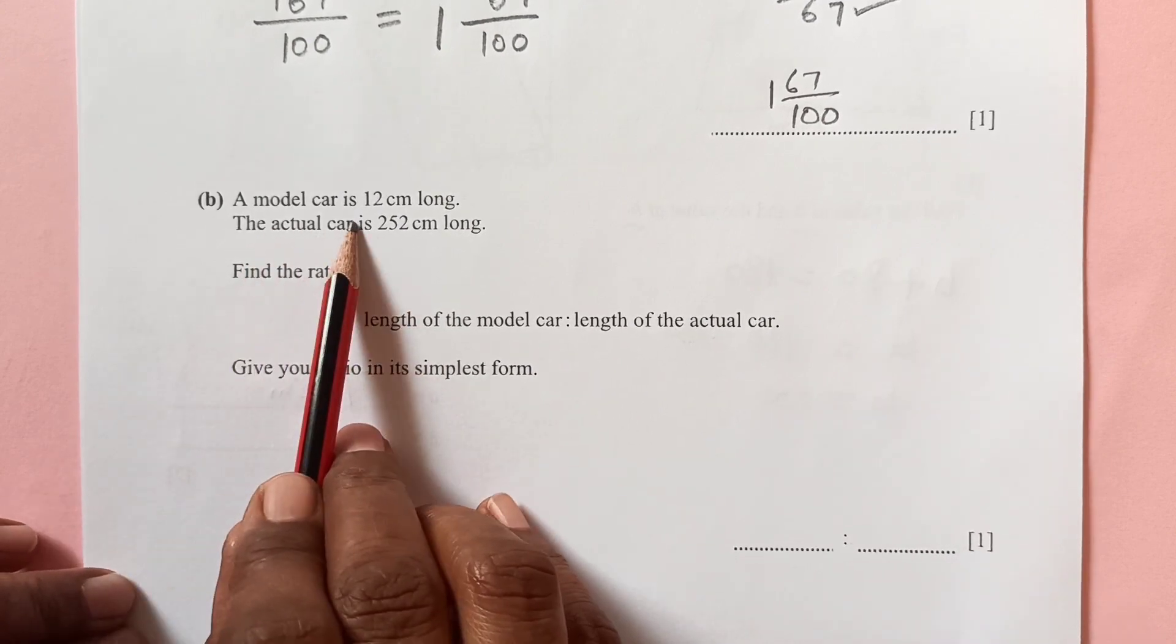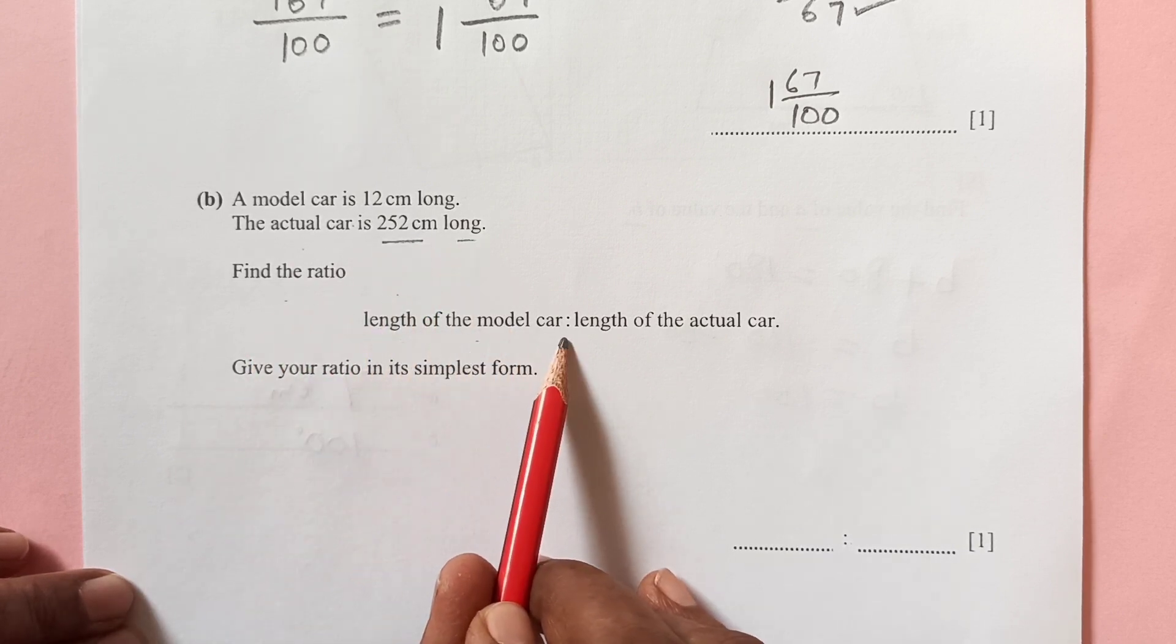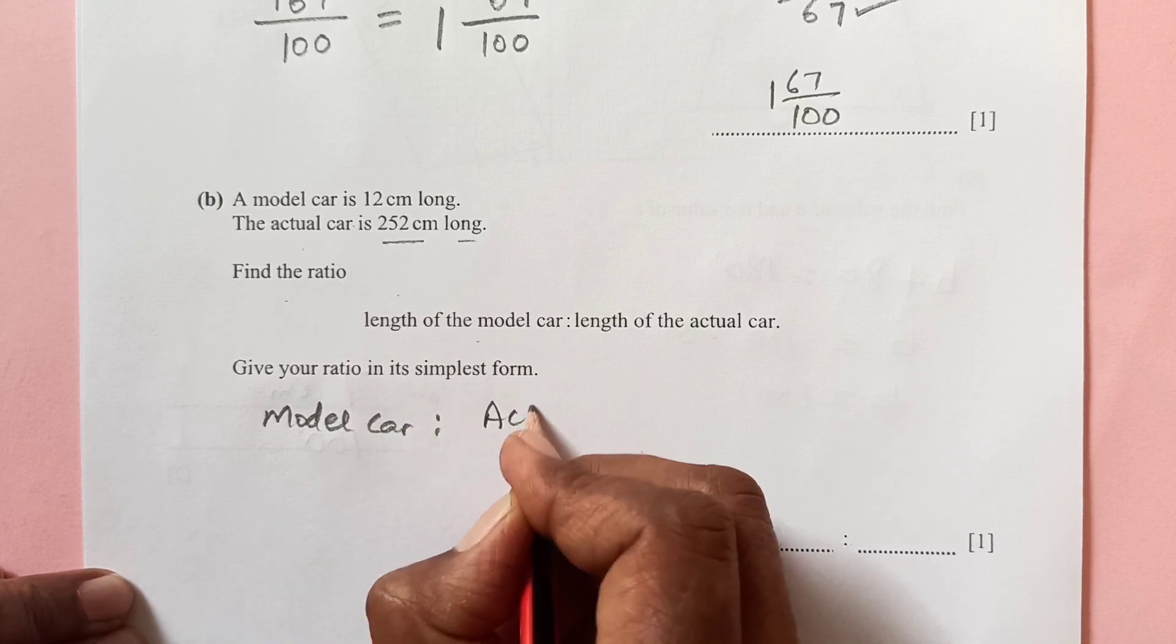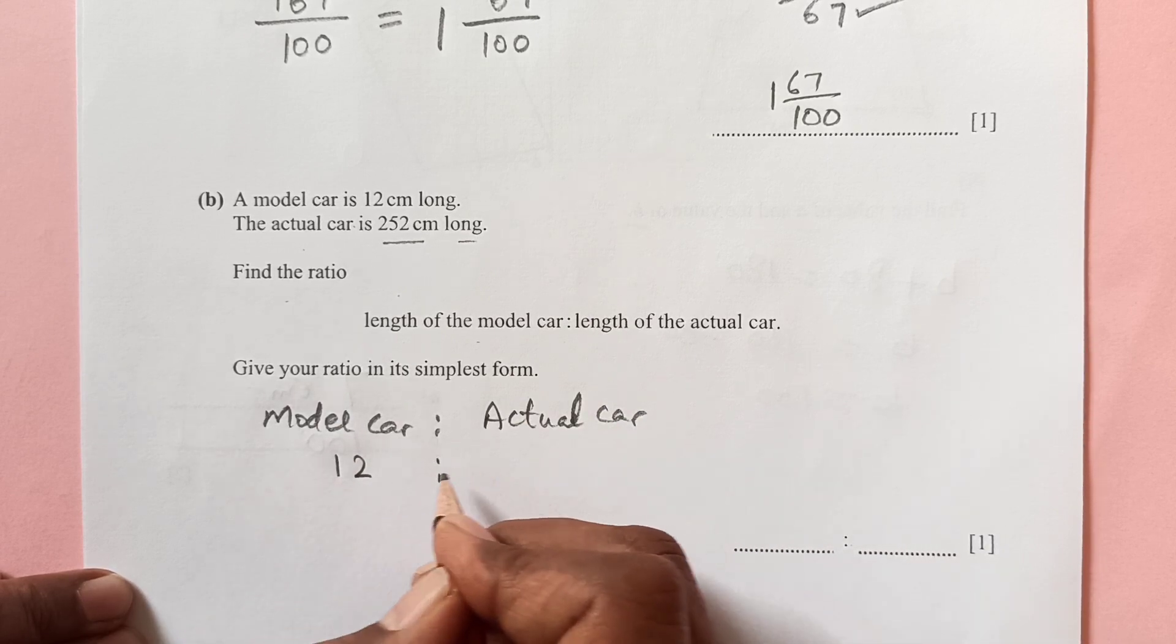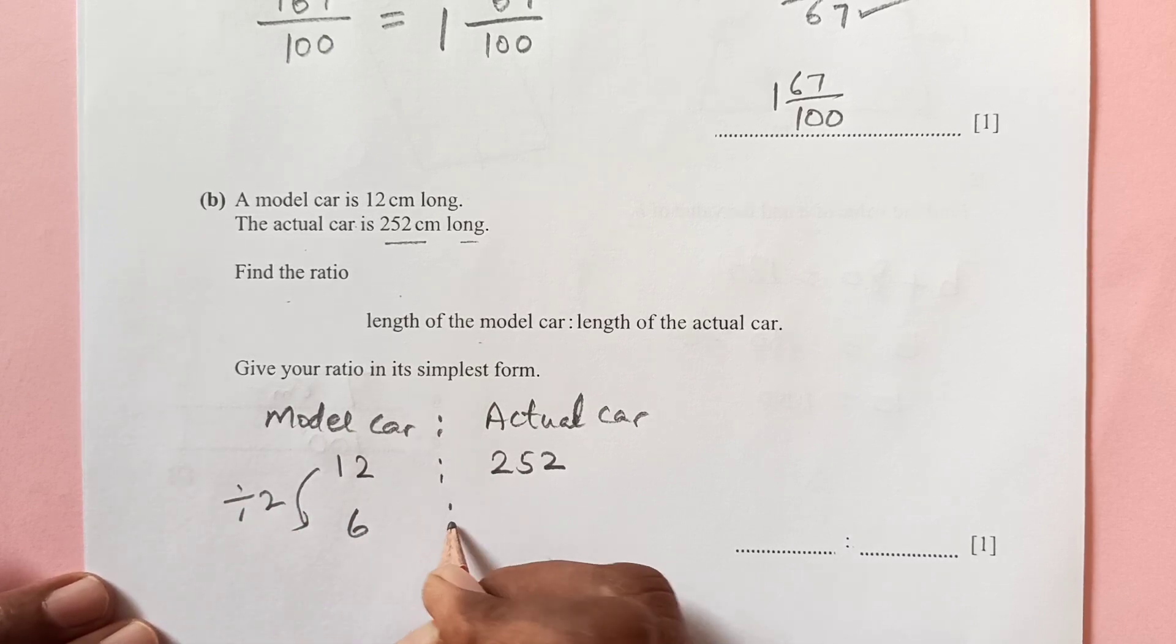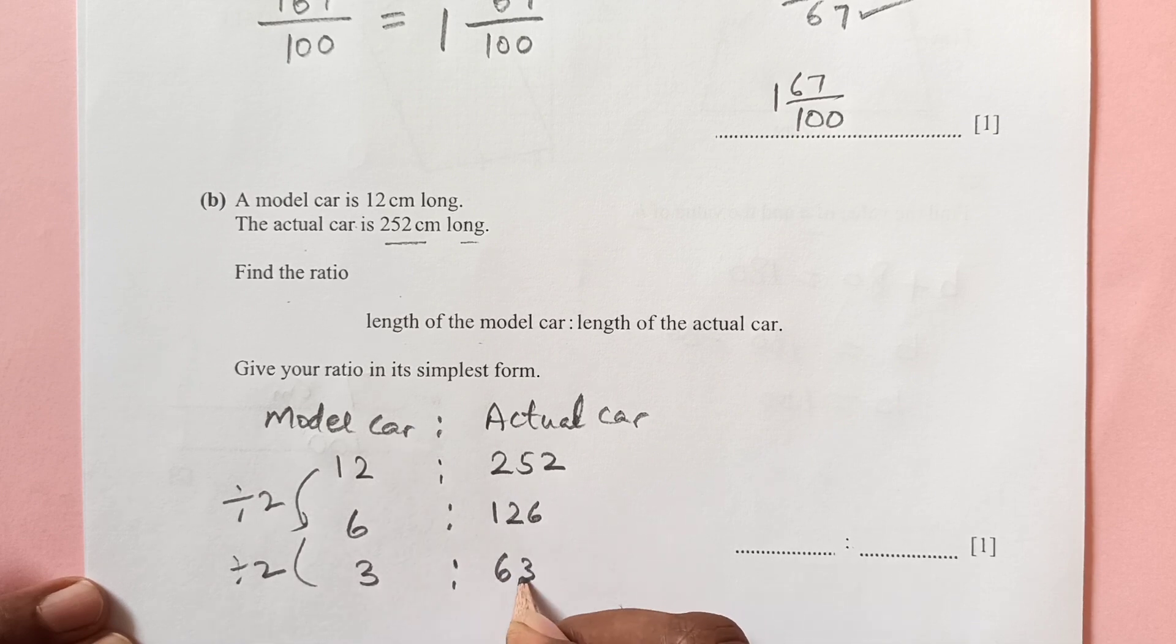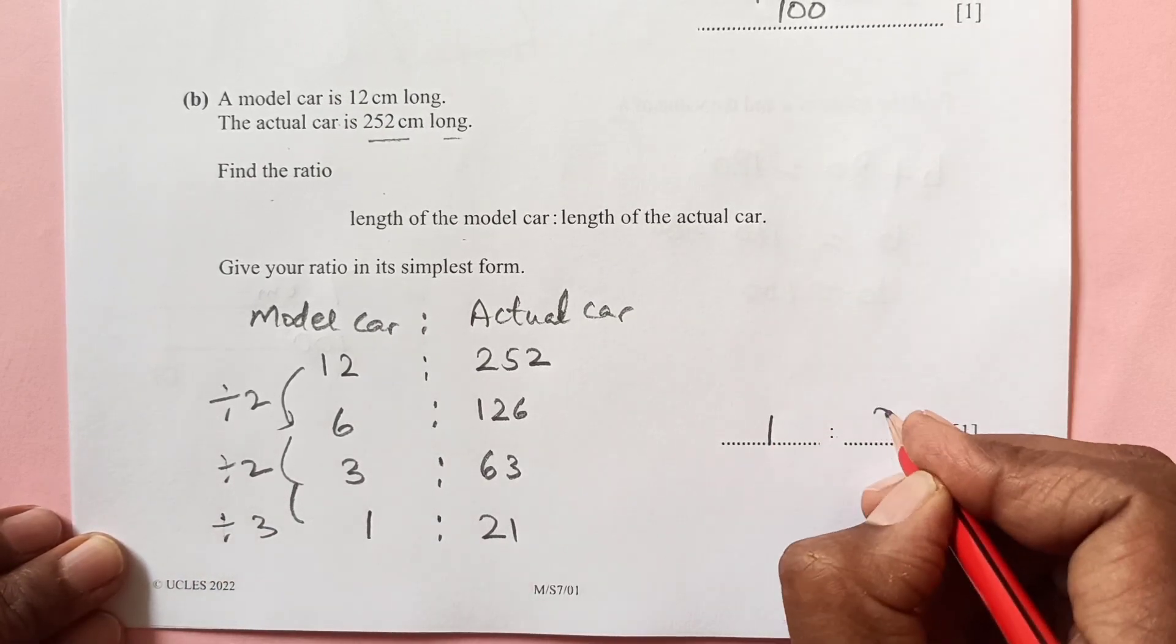Part B. A model car is 12 centimeters long. The actual car is 250 centimeters long. Find the ratio, the length of the model car to the length of the actual car. So model car is 12 centimeters and the other one is 252. So now we just simplify that. When you simplify, divide by 2, you get 6 to 126. Again divide by 2, this is 3 to 63. Now they are multiples of 3, so we can divide it by 3. So this is 1 to 21.